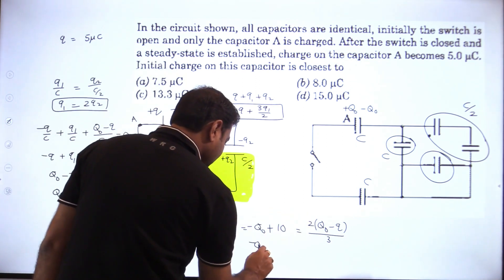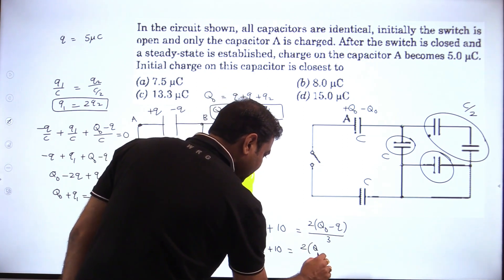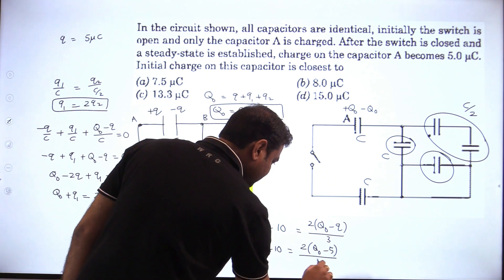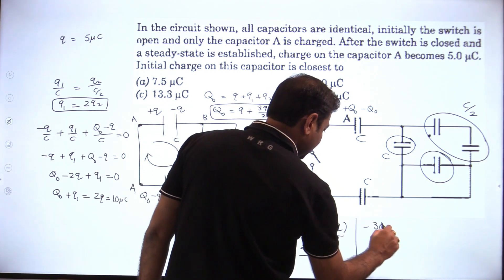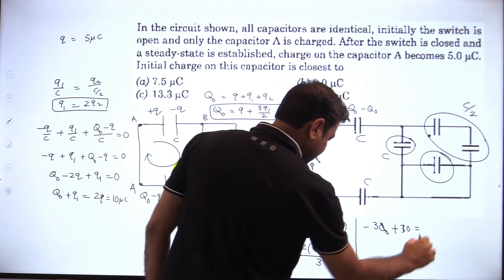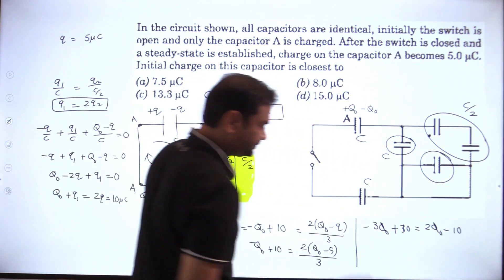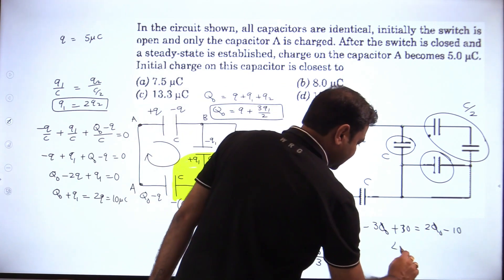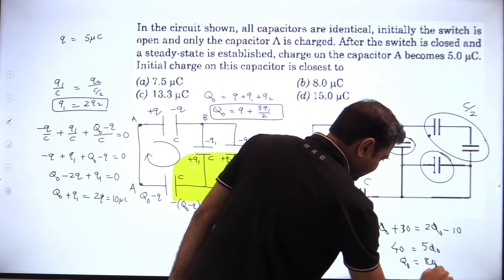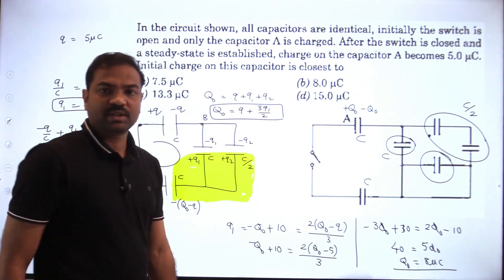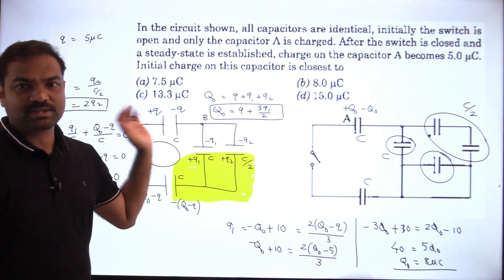Now we can find q₀. We have q₁ = 5 as given. From q₀ + q₁ = 10: q₁ = 10 - q₀. Setting equal: 10 - q₀ = 2(q₀ - 5)/3. Cross-multiplying: -3q₀ + 30 = q₀ - 10, so 40 = 4q₀, giving q₀ = 8 μC. That's the answer. The key ideas used were conservation of charge and Kirchhoff's loop principle.